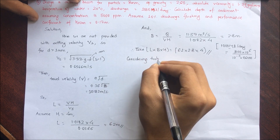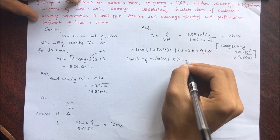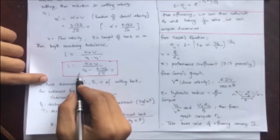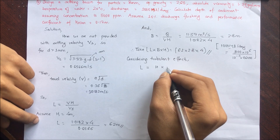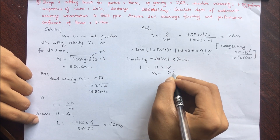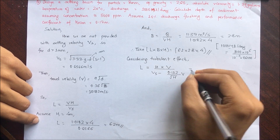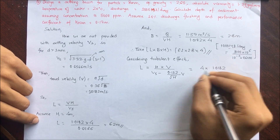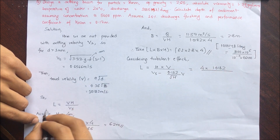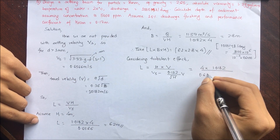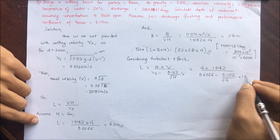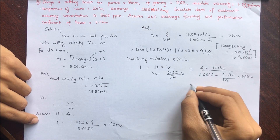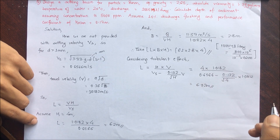Considering the turbulence effect, the length formula becomes: L = H × v / (vs − 0.132 / (√H × v)). Substituting H = 4, v = 1.0182, vs = 0.6566: L = 4 × 1.0182 / (0.6566 − 0.132 / (√4 × 1.0182)) = 6.92 m. This length accounts for turbulence and is slightly greater than the earlier 6.2 m value.